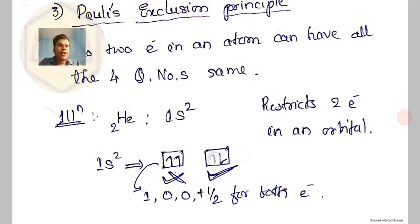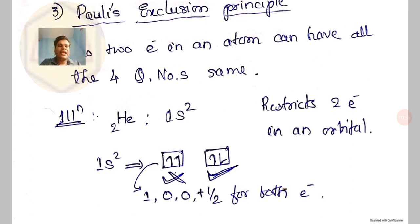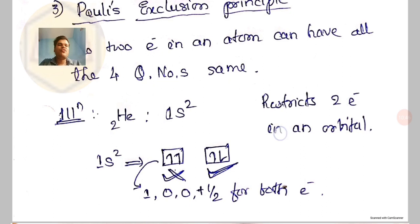In the correct representation, the first three quantum numbers are the same for both electrons, but the fourth quantum number — spin — differs: one is plus half and the other is minus half. So that is acceptable. This is Pauli's exclusion principle. It is because of Pauli's exclusion principle that an orbital can have just two electrons — the maximum number of electrons in an orbital is restricted to two.